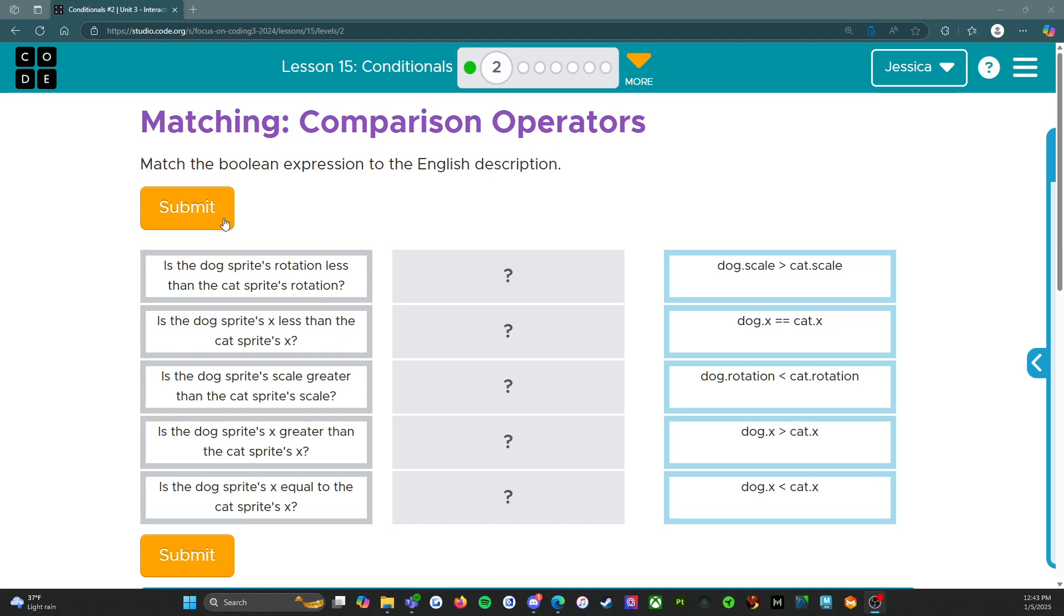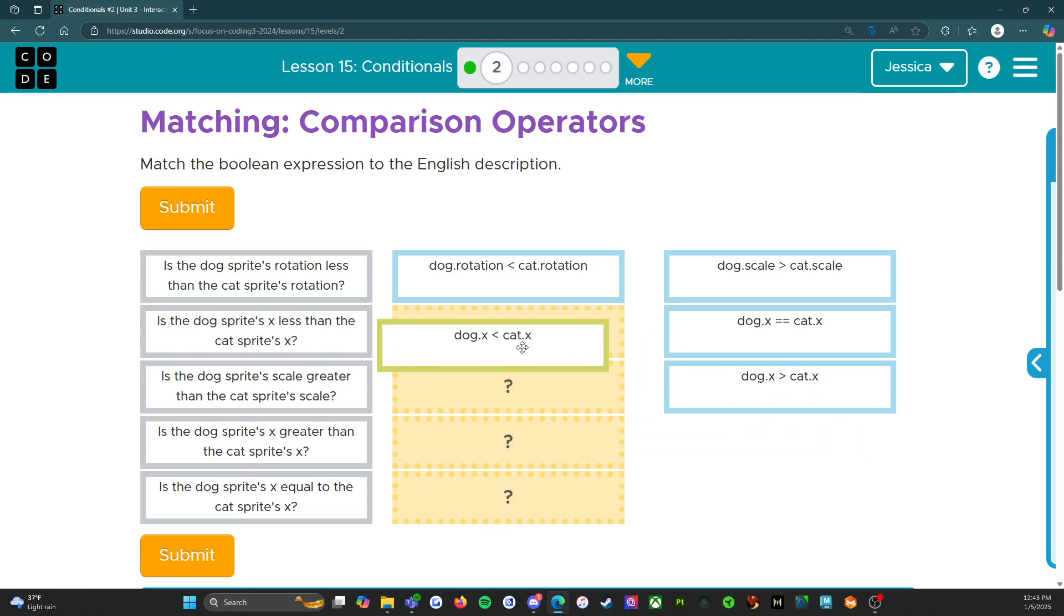Is the dog sprite's rotation less than the cat sprite's rotation? So dog rotation less than cat rotation. Is the dog sprite's X less than the cat sprite's X? So dog X less than cat X.